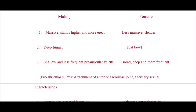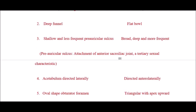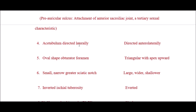Regarding the pelvis: the male pelvis is massive, stands higher and more erect, and is deep funnel-shaped. The female pelvis is less massive, cylindrical, and flat bowl-shaped. The male pelvis has a shallow and less frequent pre-auricular sulcus, while in females it is broad, deep, and more frequent — providing attachment to the sacroiliac joint, considered a tertiary sexual characteristic. The acetabulum is directed anterolaterally in females. The obturator foramen is oval in males and triangular with apex forward and upward in females.